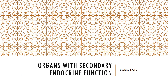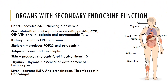Other organs have secondary endocrine function. The heart secretes atrial natriuretic peptide (ANP), which inhibits aldosterone release by the adrenal cortex. The gastrointestinal tract possesses cells that produce secretin, gastrin, CCK, GIP, VIP, and many more. The kidney secretes EPO for red blood cell production, renin for activation of angiotensin II (a potent vasoconstrictor), and calcitriol for the absorption of calcium ions.